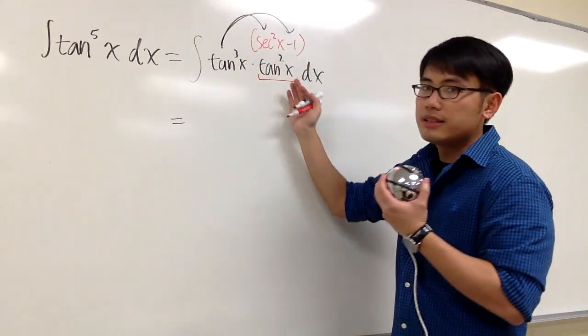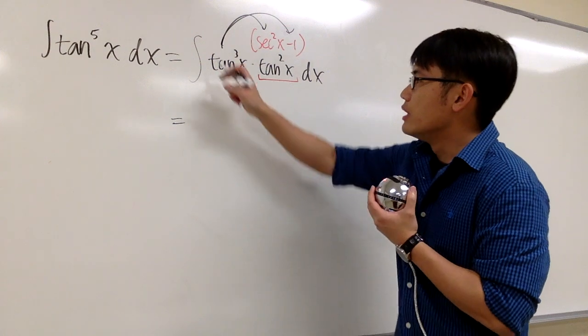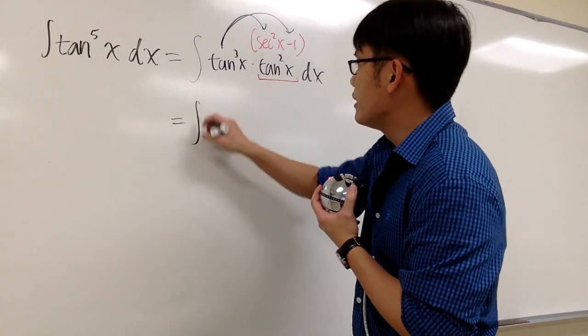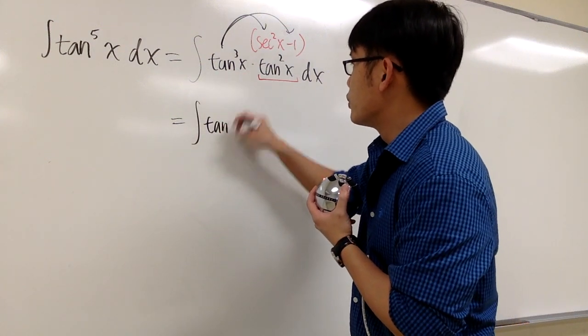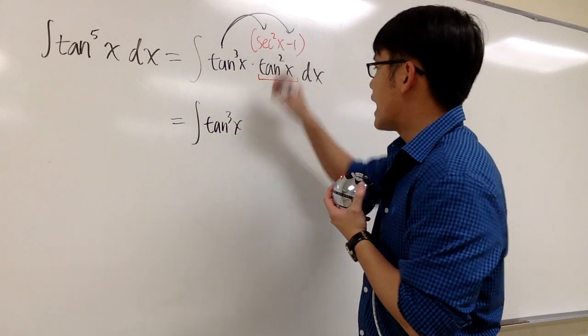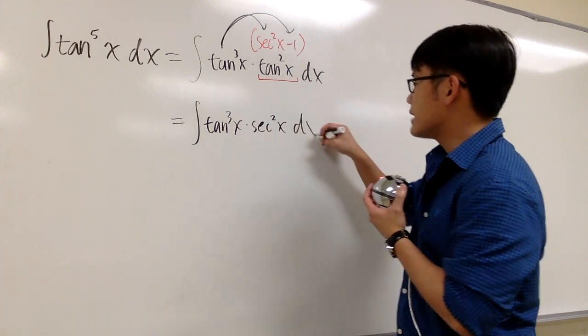But then we have two things up, the integral, and then we can just break down the integrals. The first integral is just going to be the integral tangent to the third power x times secant squared x. And that's called a stat.